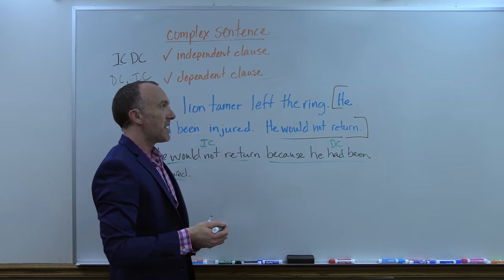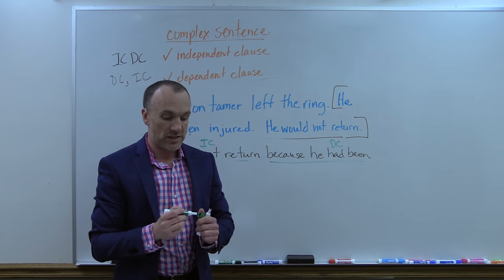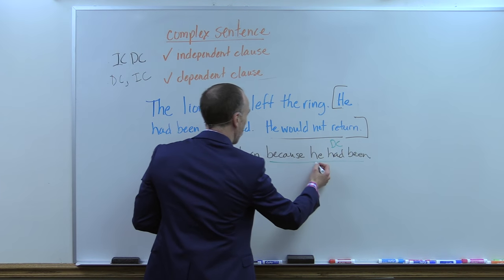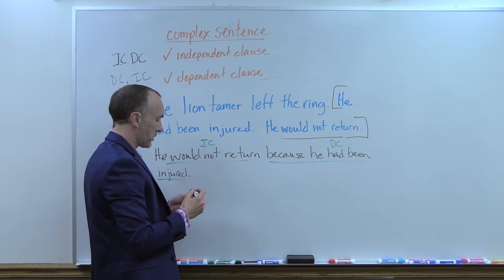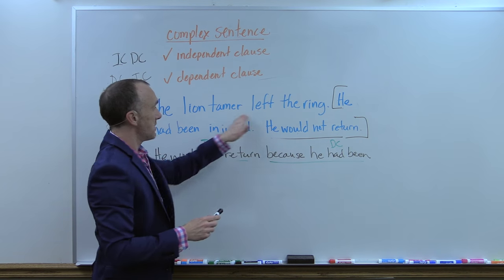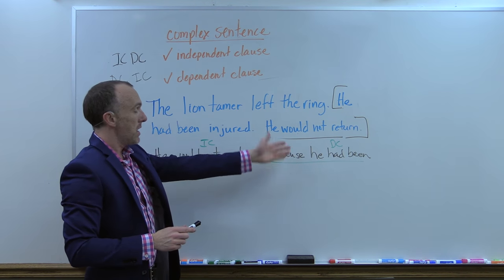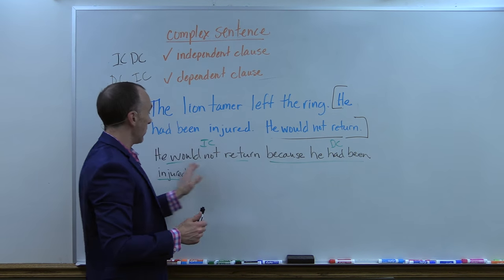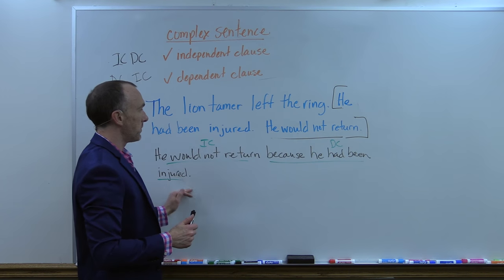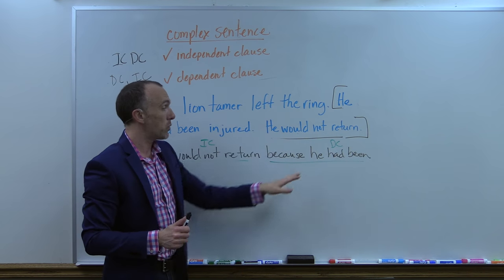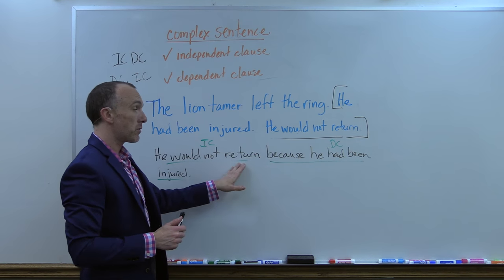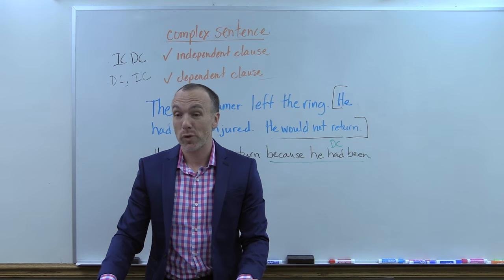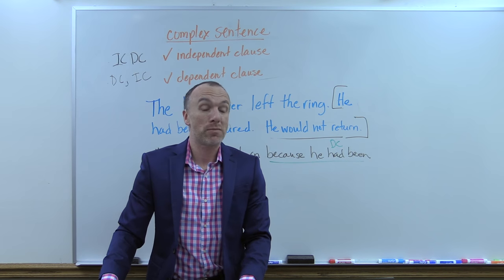So we have a complex sentence, and that makes a lot more sense. Could I switch it around — could I say the dependent clause first followed by the independent clause? Let me read it the way we have it now, then the other way. 'The lion tamer left the ring. He would not return because he had been injured.' Or: 'The lion tamer left the ring because he had been injured. He would not return.' Both types of complex sentences would work. It sounds great — I like both of them.